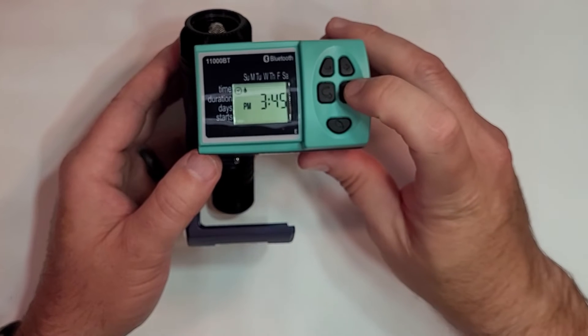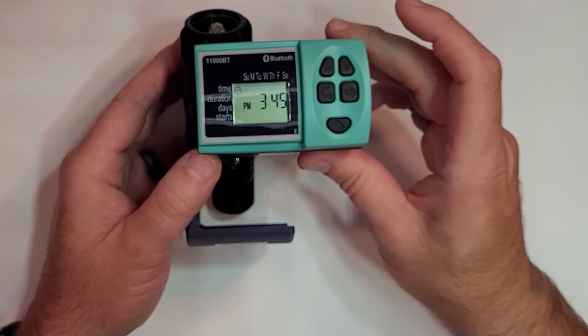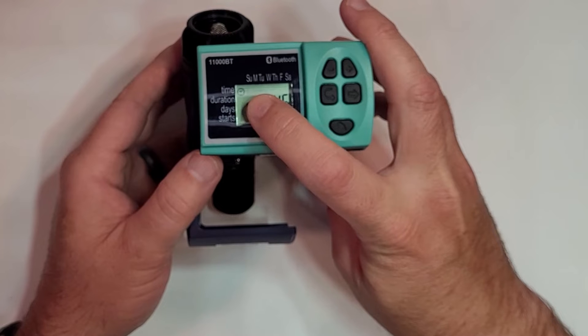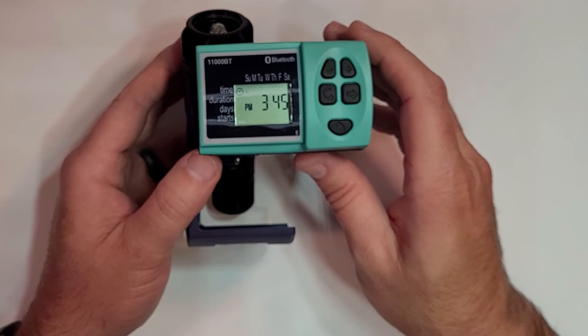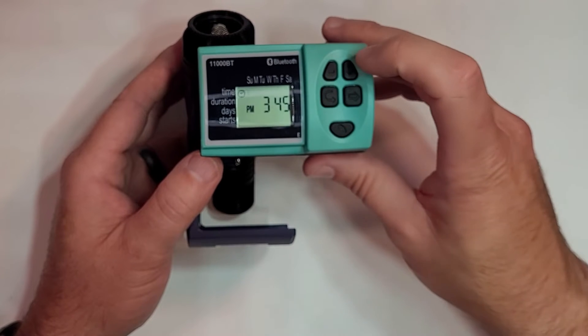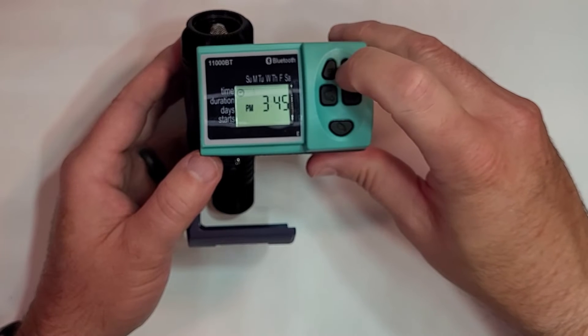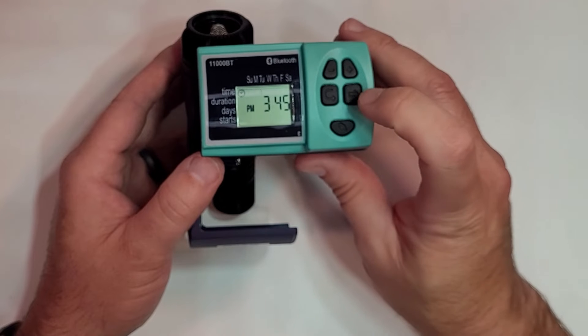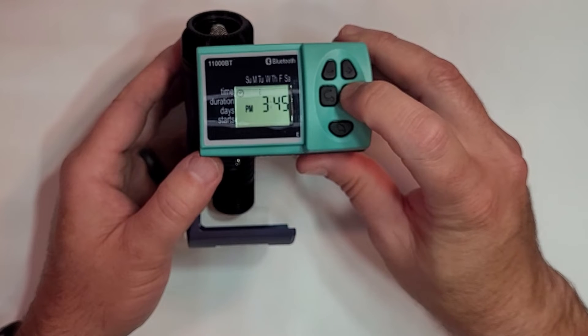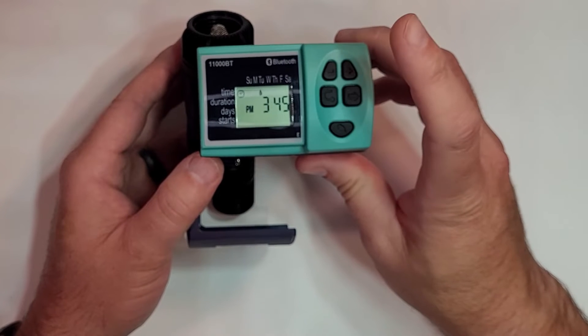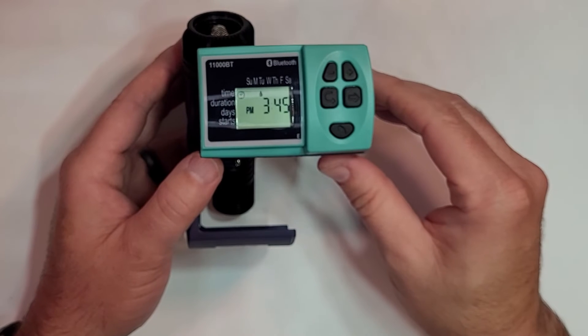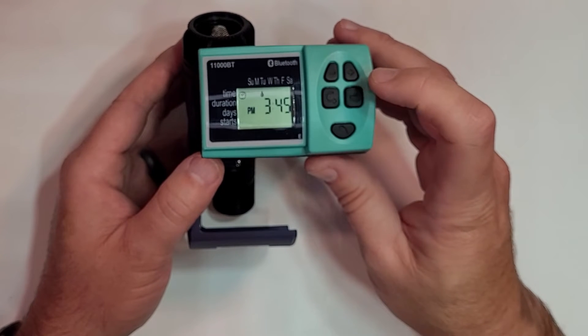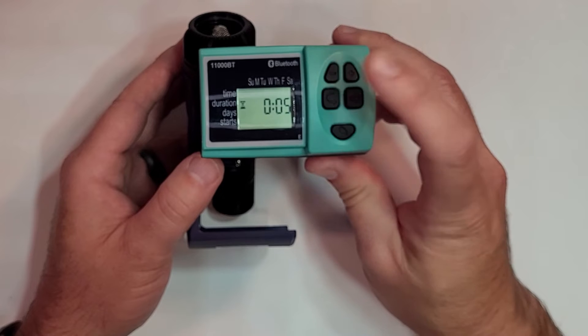Then we press our right button again. The little raindrop in the top left hand corner of the screen starts flashing saying, hey I think it's Sunday. We're going to press plus plus that'll get us over to Tuesday, so we're good. Then we're going to press the enter button that saves all of those settings. You can see nothing's flashing there.